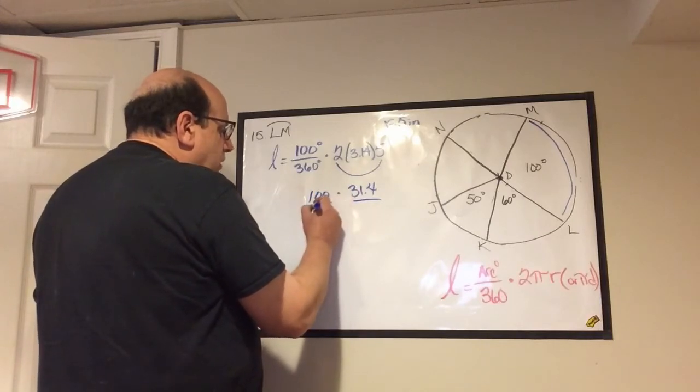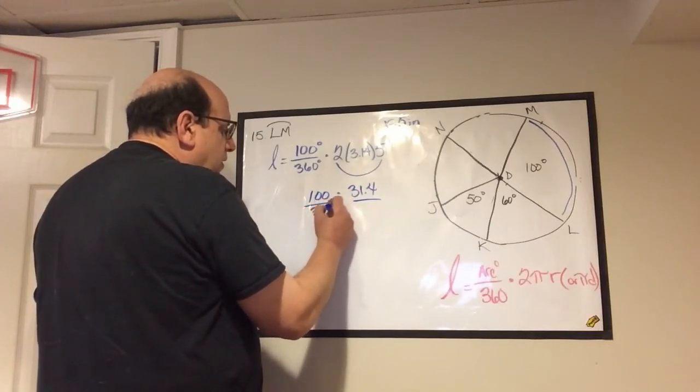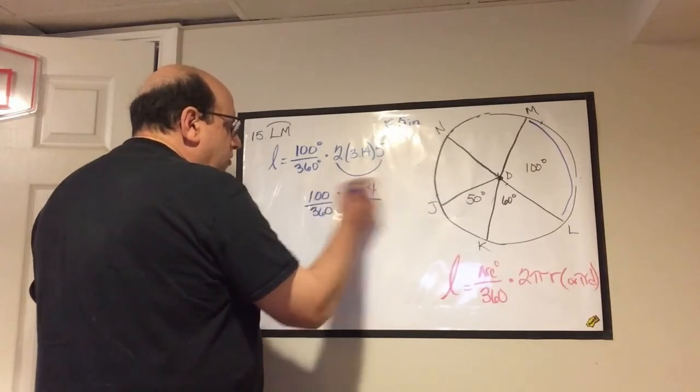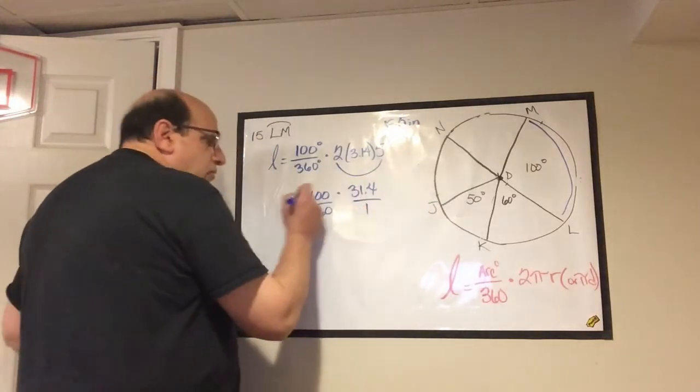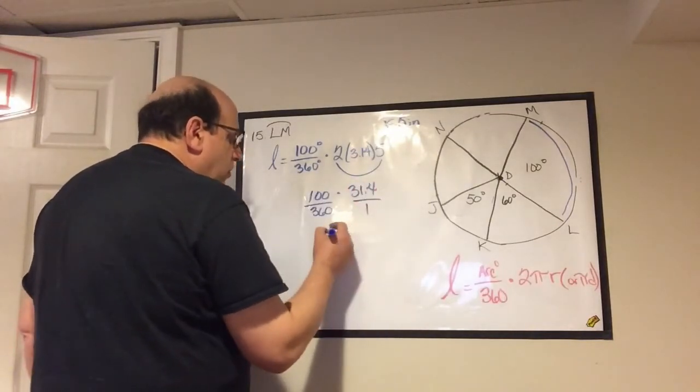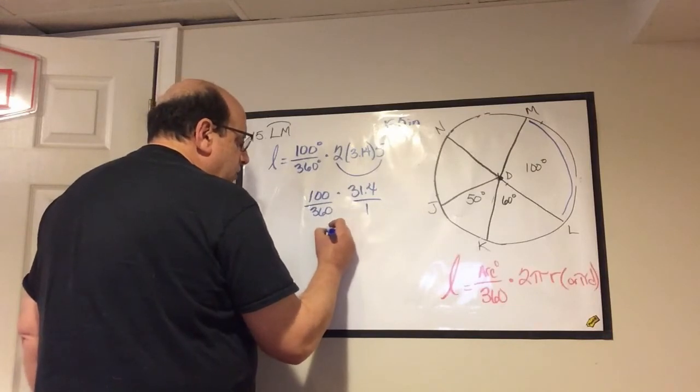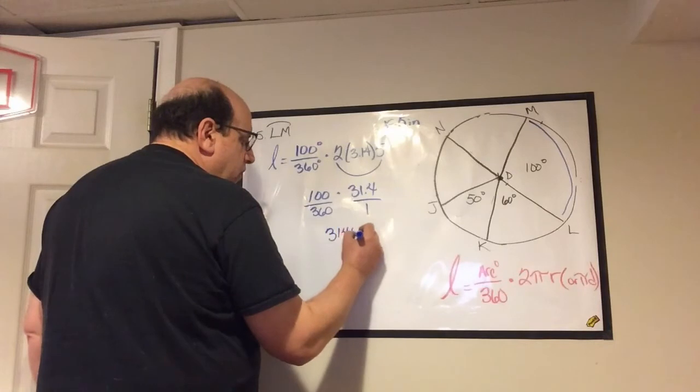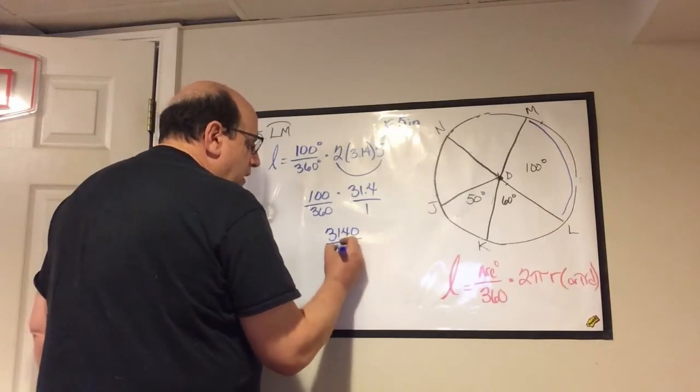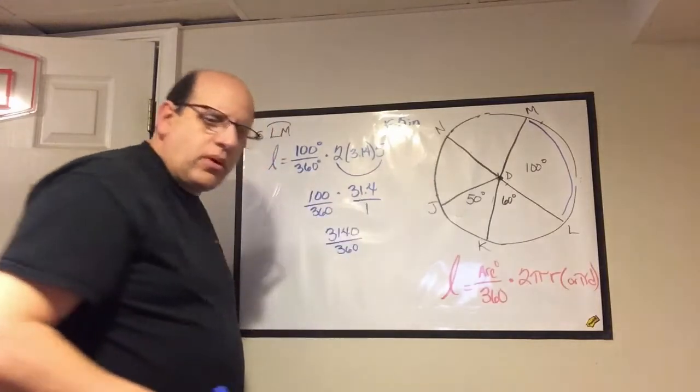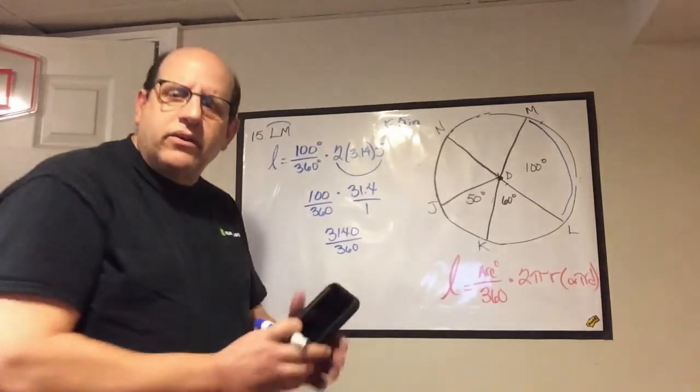Then you could just do 100 over 360 and then just do a regular fractional multiplication. So 100 times 31.4 is 3,140 divided by 360, and that's where our actual calculator is going to have to come in handy.